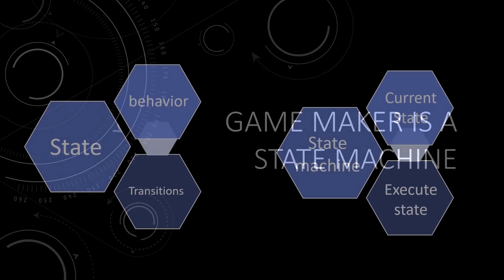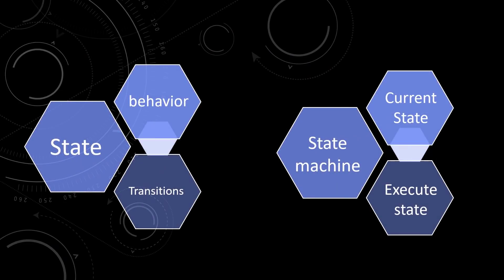For our state machines, we need two things. First, are states that describe how the state machine should behave and change state — this is often represented as a set of scripts. Second, is the state machine itself. It must be able to have a current active state and run the code stored in that state.